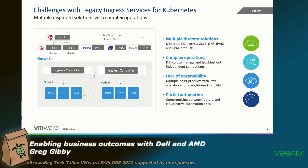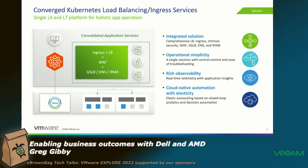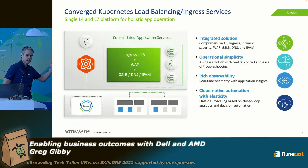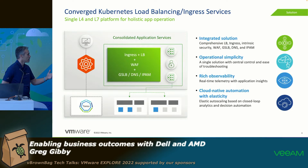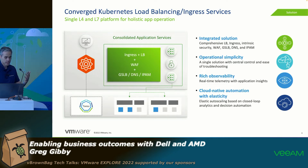What we bring with Avi or NSX Advanced Load Balancer is a single solution that solves all these problems. We have one load balancer that can do end-to-end load balancing, so it's operationally simple. We have automation end-to-end with elasticity, and we also have rich observability. When you deploy an application to your customers, we have visibility end-to-end.